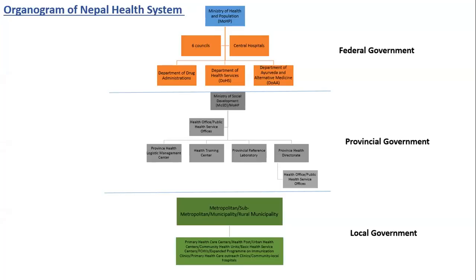This is the organogram of Nepal's health system. Currently there are three tiers of government functioning in Nepal. The Ministry of Health and Population is the lead at the federal level, the Ministry of Social Development at the provincial level, and under these governments are different local bodies providing basic health services. In terms of the health information system also, this three-tier government is functioning, but the federal government is still the commanding authority providing technical guidance to provincial and local government.